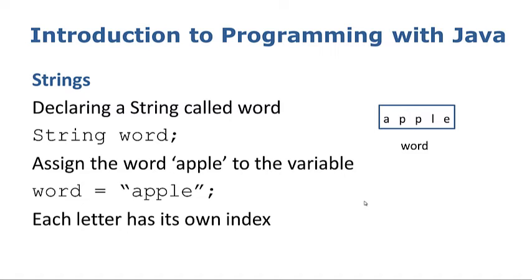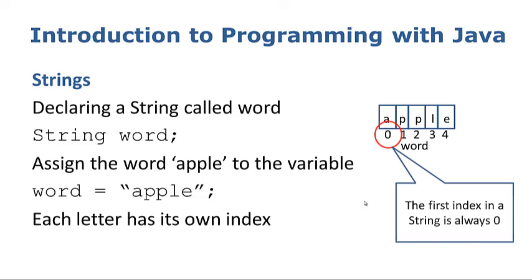In effect when I put apple into word, each letter has its own section and is assigned its own index. You will note as well that the first index in a string always starts at 0. So the letter A is at index 0, P is at index 1, P is at index 2, index 3 contains L and index 4 contains E.